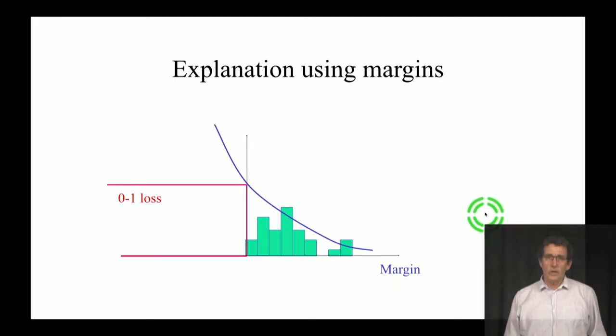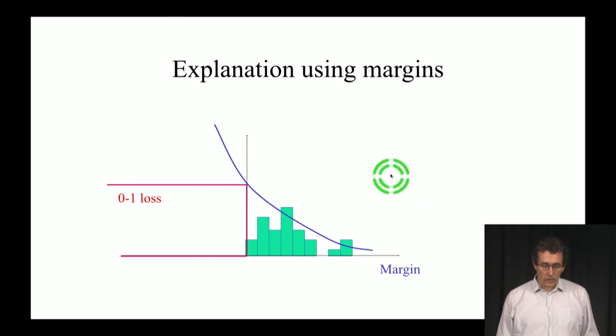To explain why this is going on, let's think again about the margins that we talked about a few videos ago. Here we have our examples, and the horizontal axis is the margin. What we see here is that all of the examples are to the right of zero. So all of the examples suffer error zero. In a sense, in terms of this zero-one loss, we're done. There's nothing more that we can do.